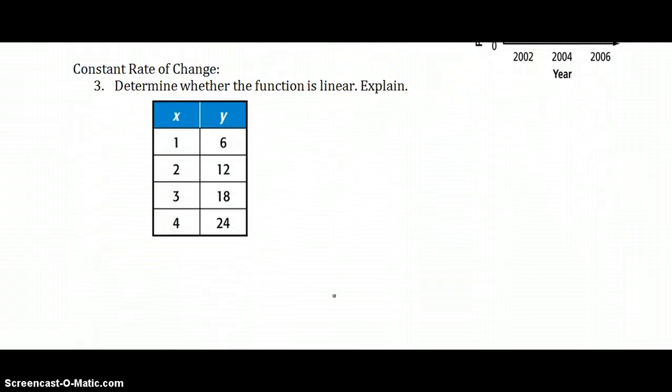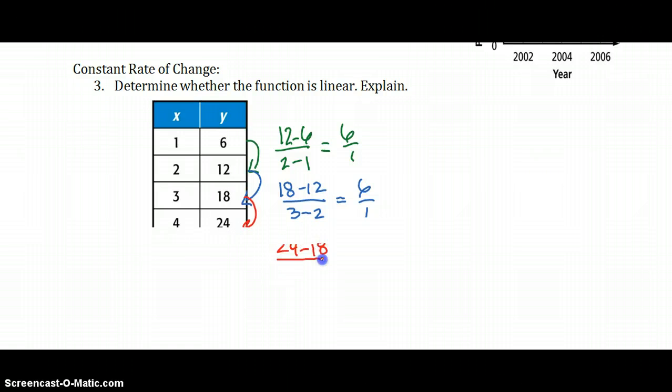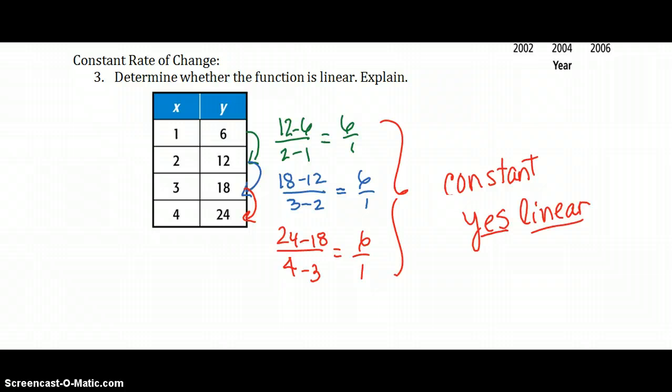Moving on, constant rate of change. Determine whether the function is linear. Remember, to be linear, they have to have the same or constant rate of change, the same rate of change. So, let's check. We're going to do the slope formula, so 12 minus 6 over 2 minus 1. Remember to put your y's on top, and that's 6 over 1. Let's try the next pair. 18 minus 12 over 3 minus 2. That's also 6 over 1. And then let's try 24 minus 18 over 4 minus 3. And it's, again, 6 over 1. So, because we have a constant rate of change, and because it's constant, yes, it will be linear.